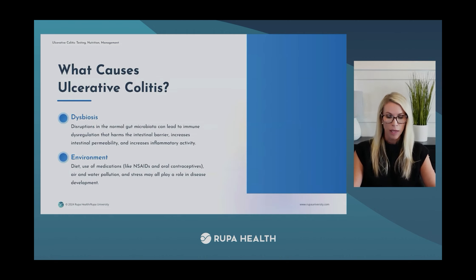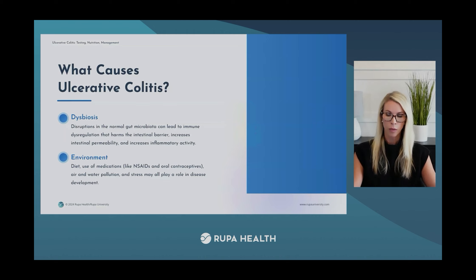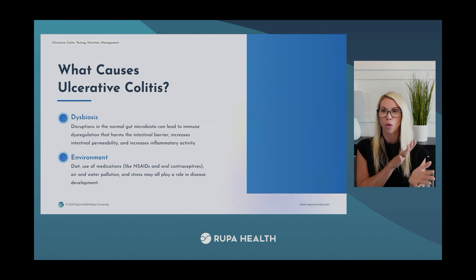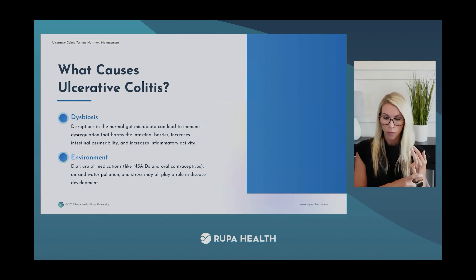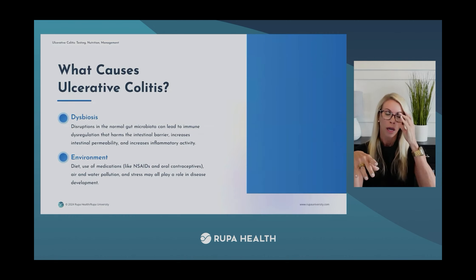Dysbiosis — an unbalanced gut microbiota — can lead to immune dysregulation, which then causes issues with the intestinal barrier, including increased intestinal permeability and inflammation. In patients with UC and dysbiosis, we generally see reduced levels of the Firmicutes phyla, overgrowth of Bacteroidetes, and often an overgrowth of anaerobic bacteria, specifically Enterococcus and Enterobacter, which may show up on comprehensive stool testing.